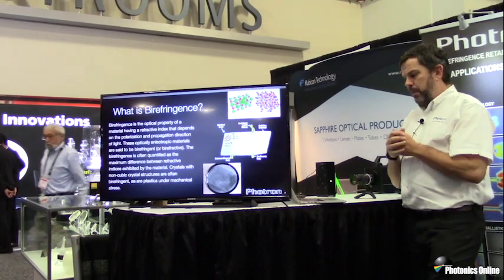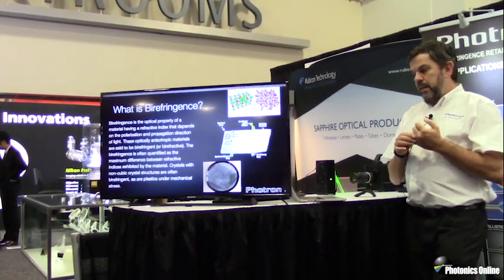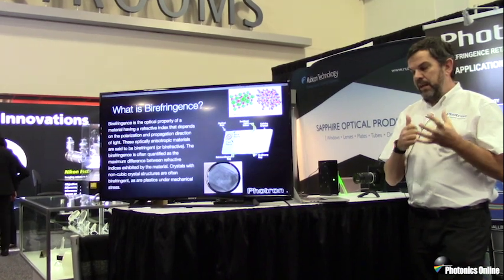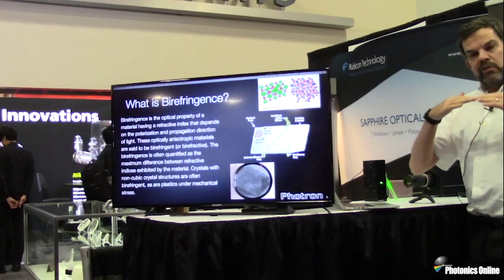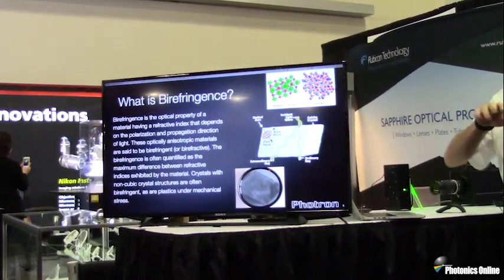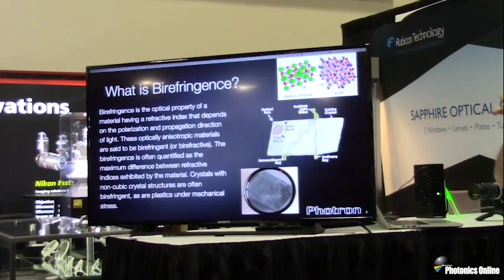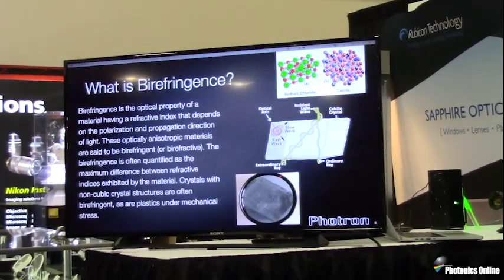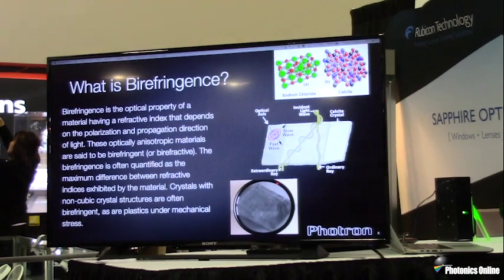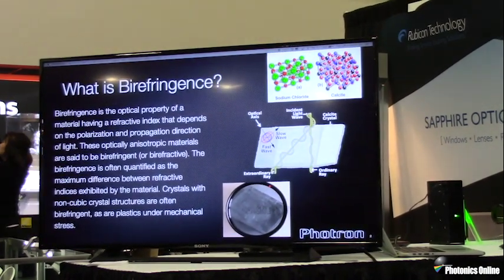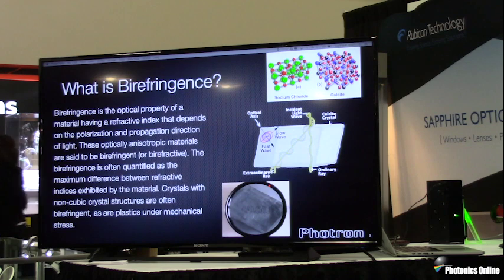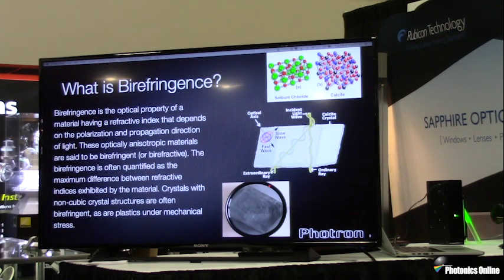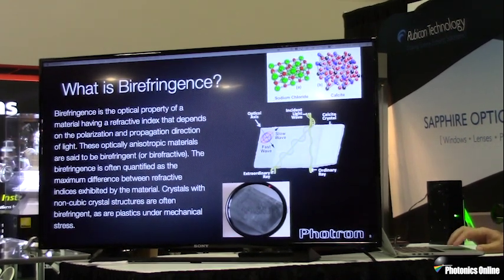Anisotropic material means it has a physical property that has a different value when measured in a different axis. A good example is wood — wood has a grain and is much stronger with the grain than across it. In optical materials such as calcite, light travels along two distinct paths: the ordinary and extraordinary rays, which are dependent upon the polarization of the light entering the material.